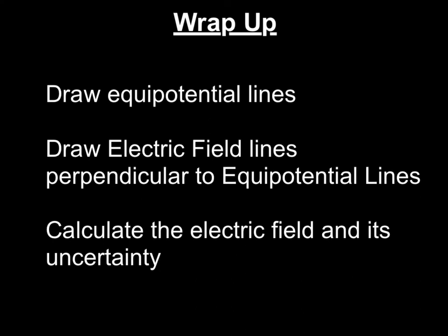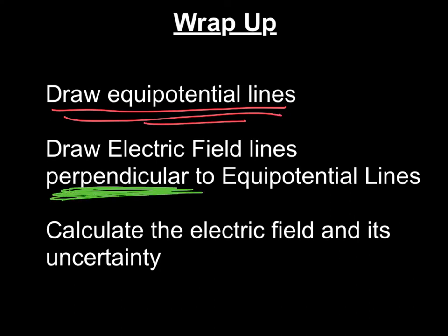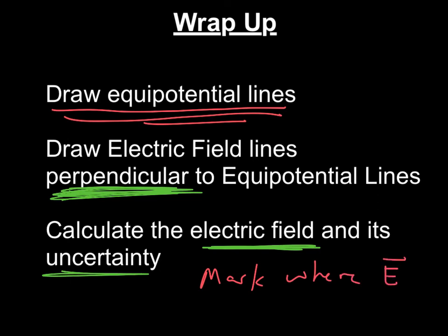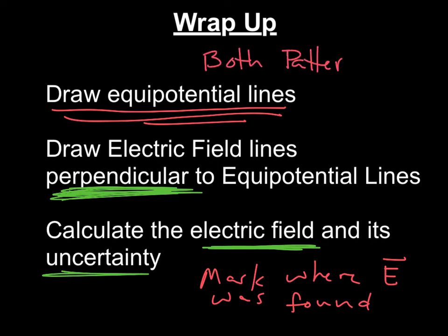The wrap-up: draw equipotential lines — this looks like connect the dots. Then draw your electric field lines perpendicular to the equipotential lines, and calculate the electric field the number of times specified in your lab handout. Mark where E was found — you need to tell me where you measured the electric field. You could also use delta V as one volt or two volts, or find a really long field line and calculate the average electric field. You'll repeat this for both patterns — both patterns use the exact same process. Work carefully and slowly, and when you're done, you'll have a nice pretty picture and hopefully some knowledge of the electric field.